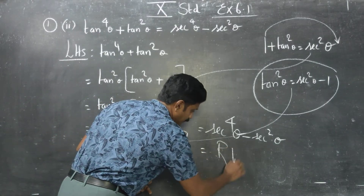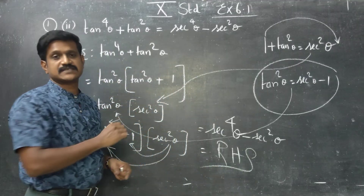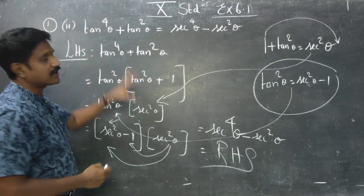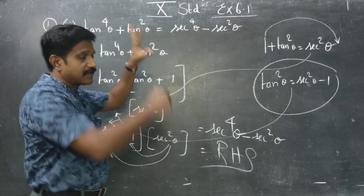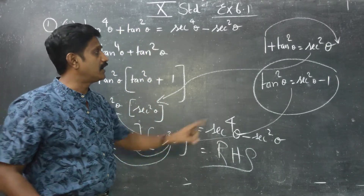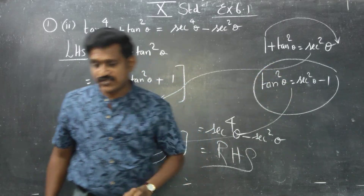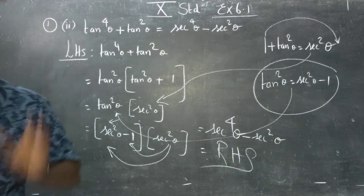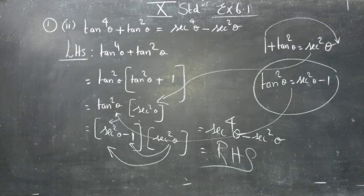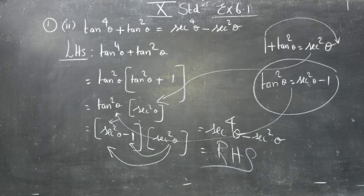This equals RHS. The LHS has come to equal the RHS. You can do this sum very easily. The formula 1 plus tan square theta is equal to secant square theta is a very important formula to complete this sum. Thank you.